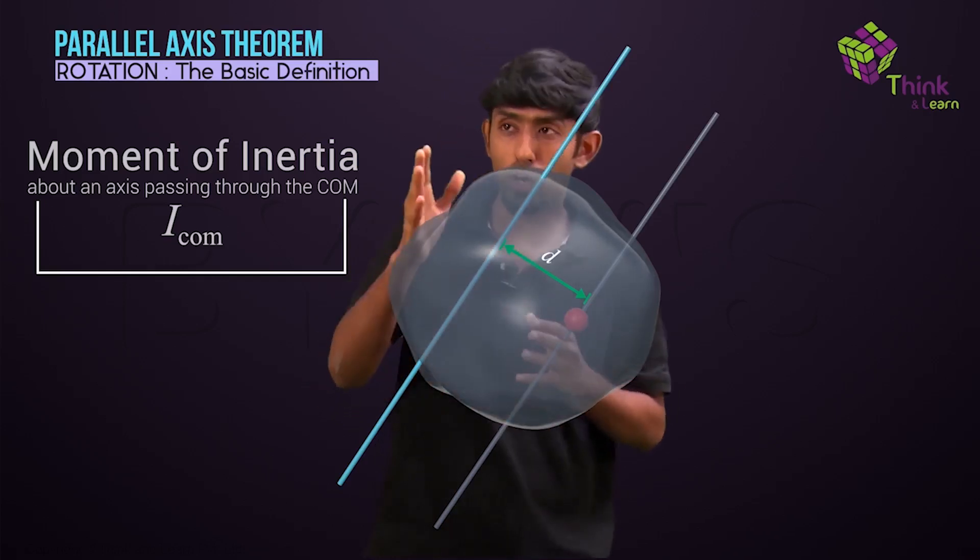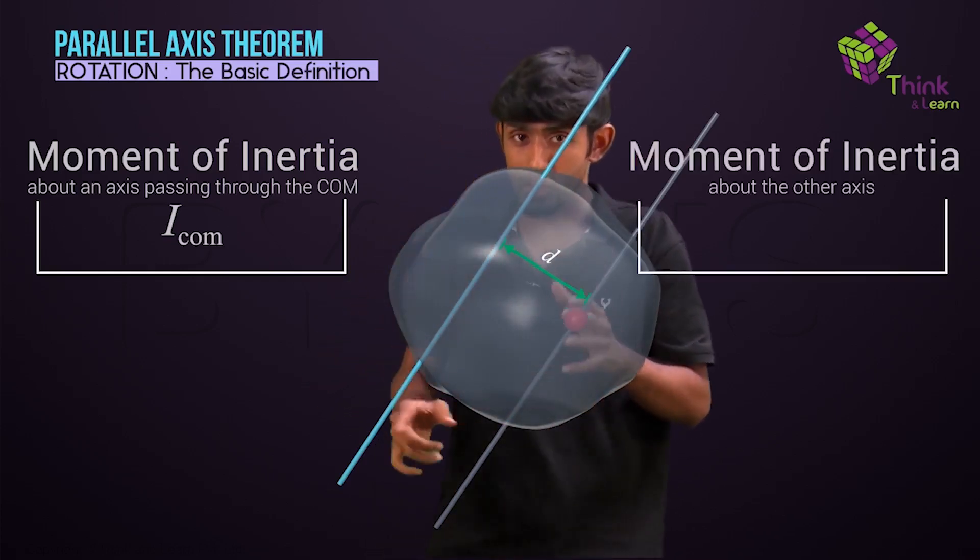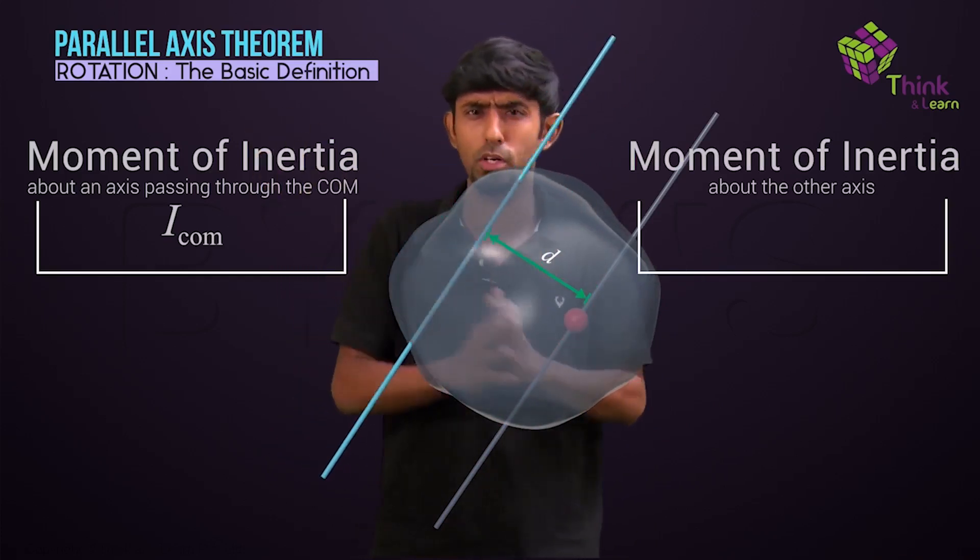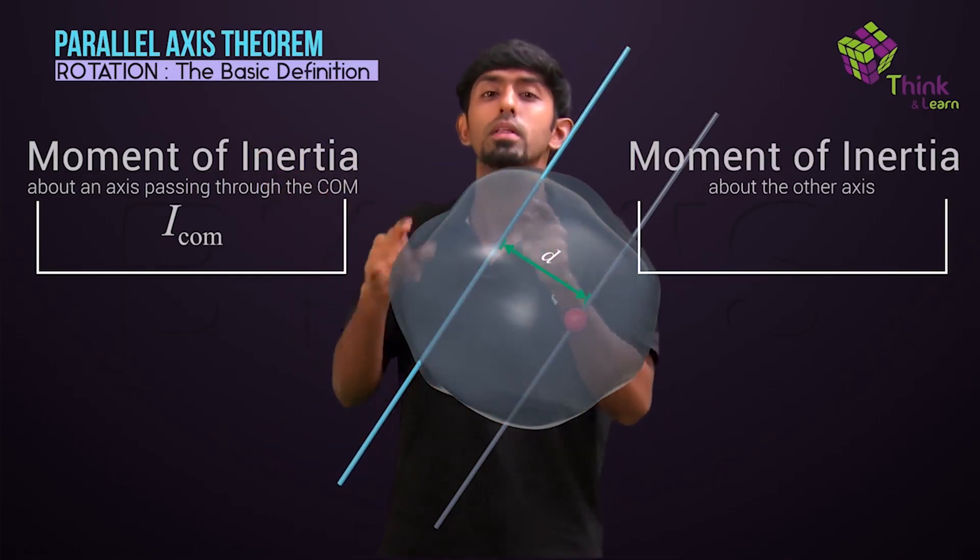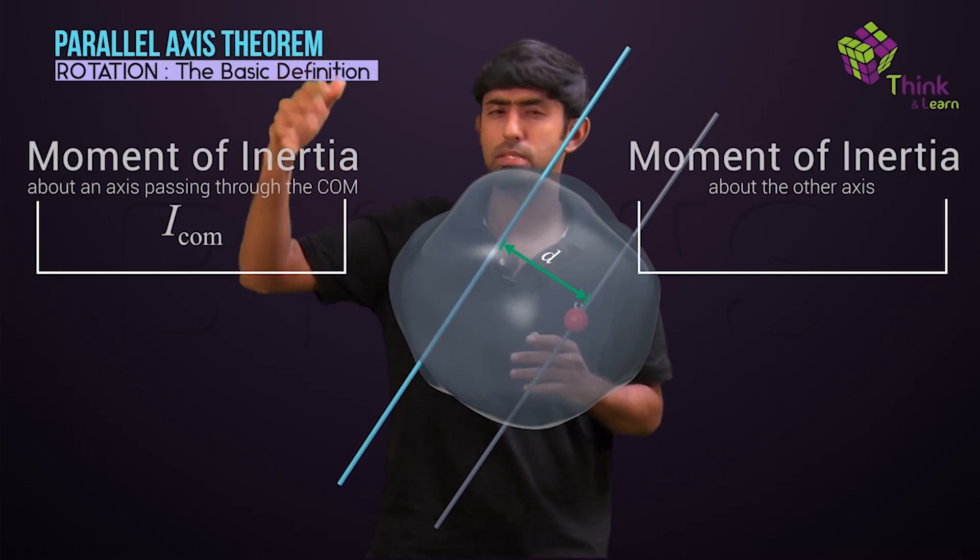Then if I call the moment of inertia of this body about that axis, which can be inside or outside the body, it can be anywhere, that moment of inertia, let me call it I sub P.